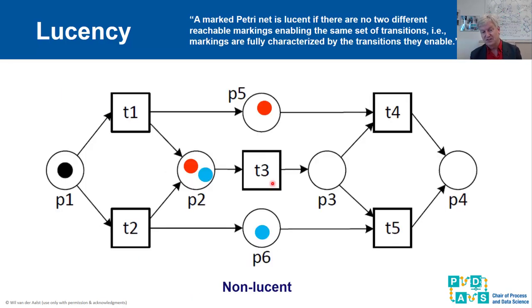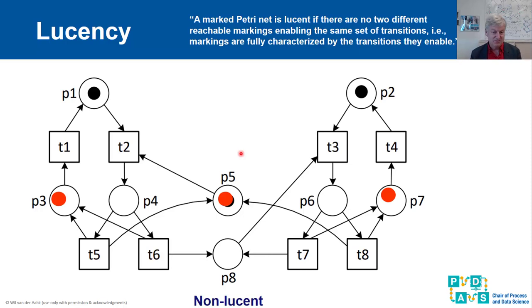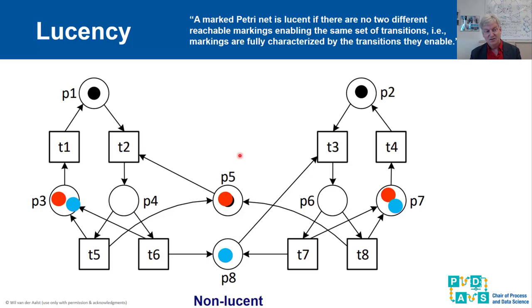Here is an example of a net that is free choice but not lucent. Looking at the reachable markings, we find the marking with a token in P3, P5, and P7, and also the marking with a token in P3, P7, and P8. In both the red and blue markings, transitions T1 and T4 are enabled. So it is invisible based on the enabled transitions whether P5 or P8 is marked — this is not lucent.